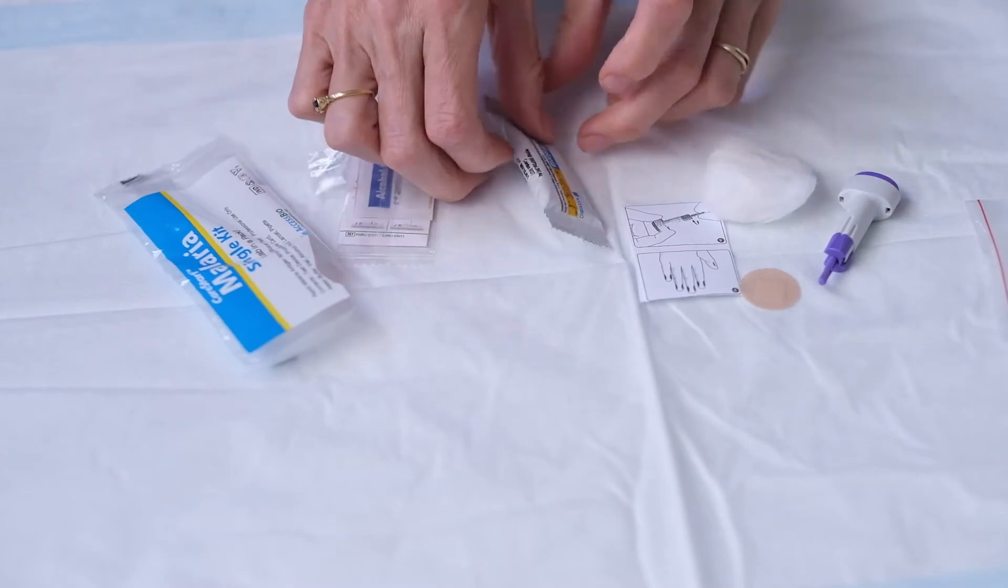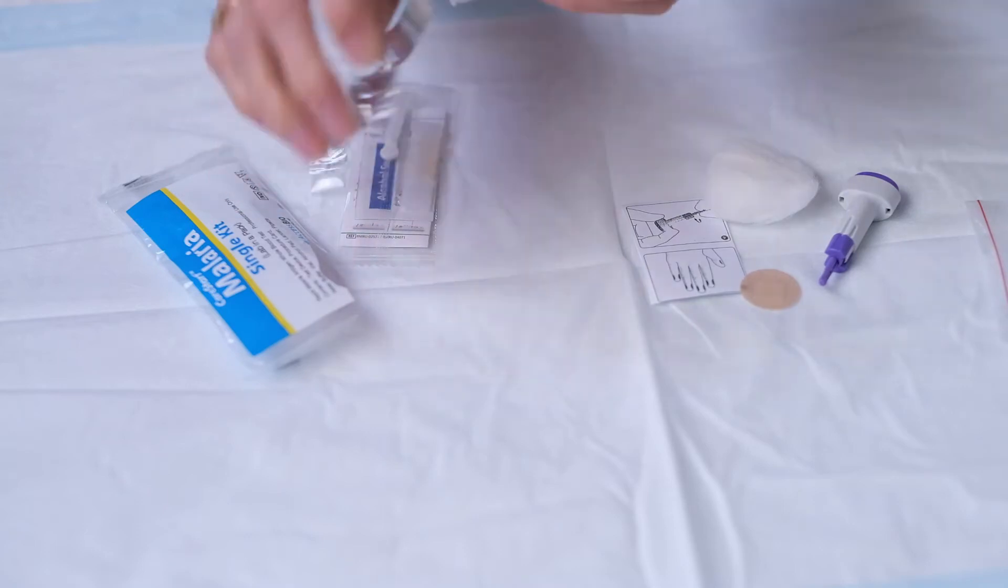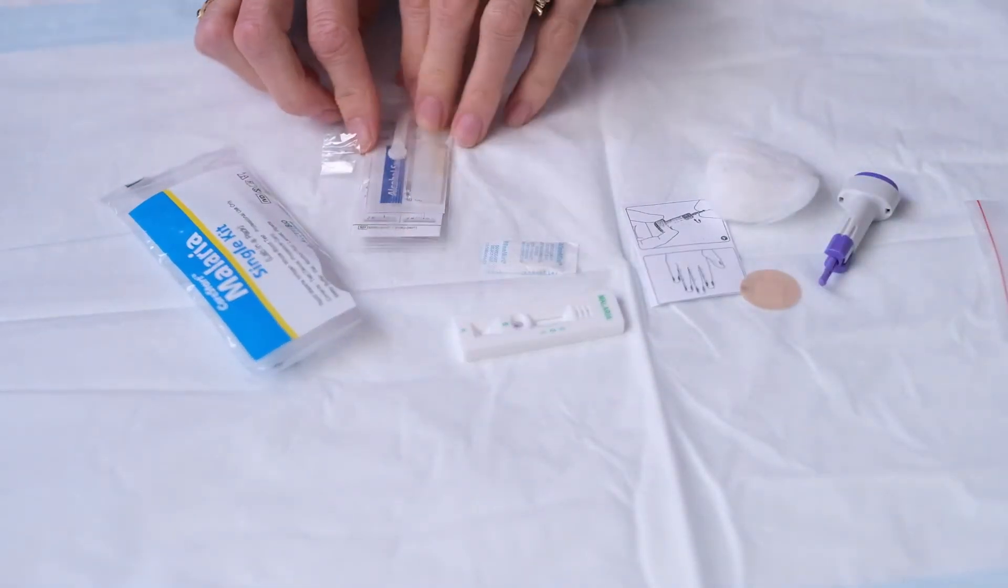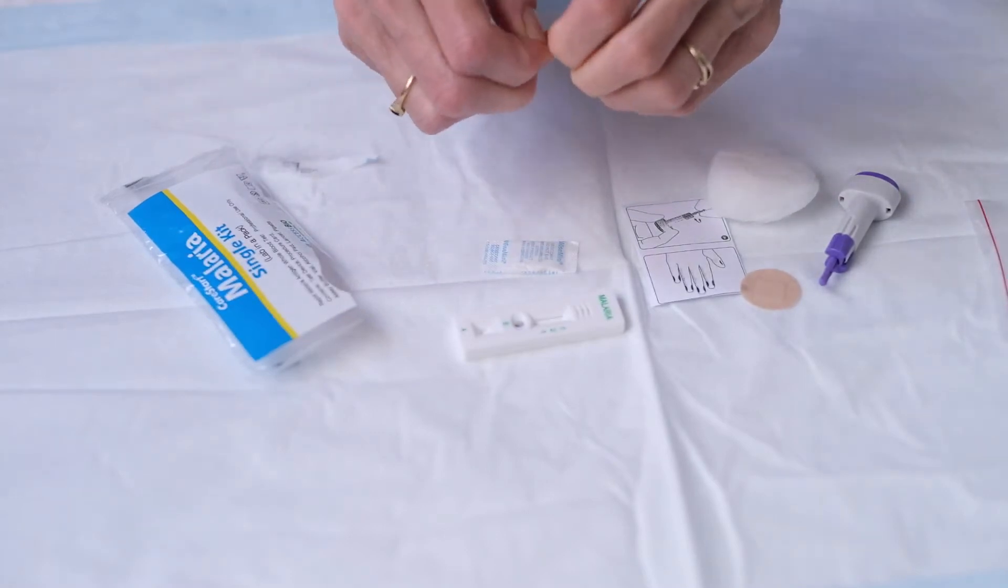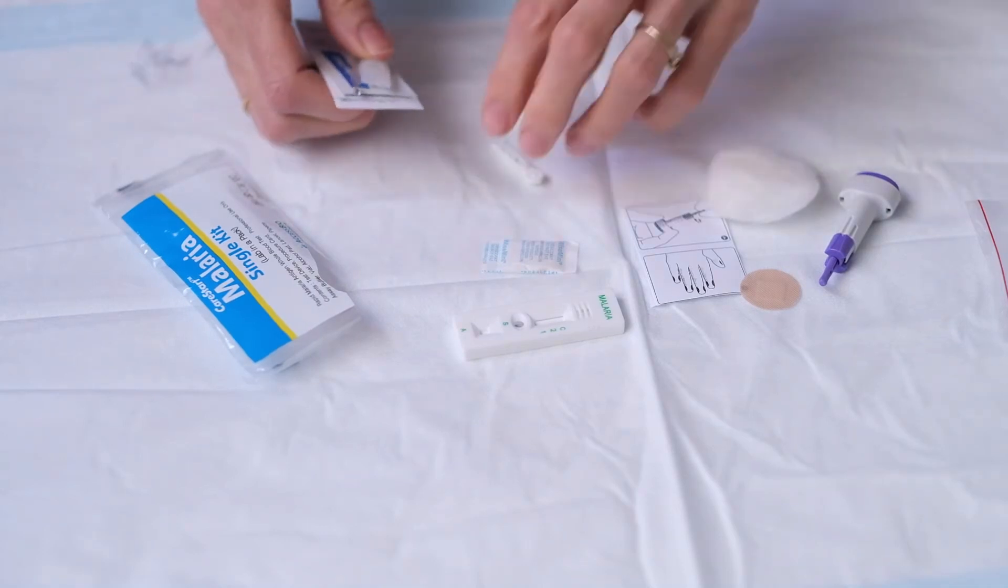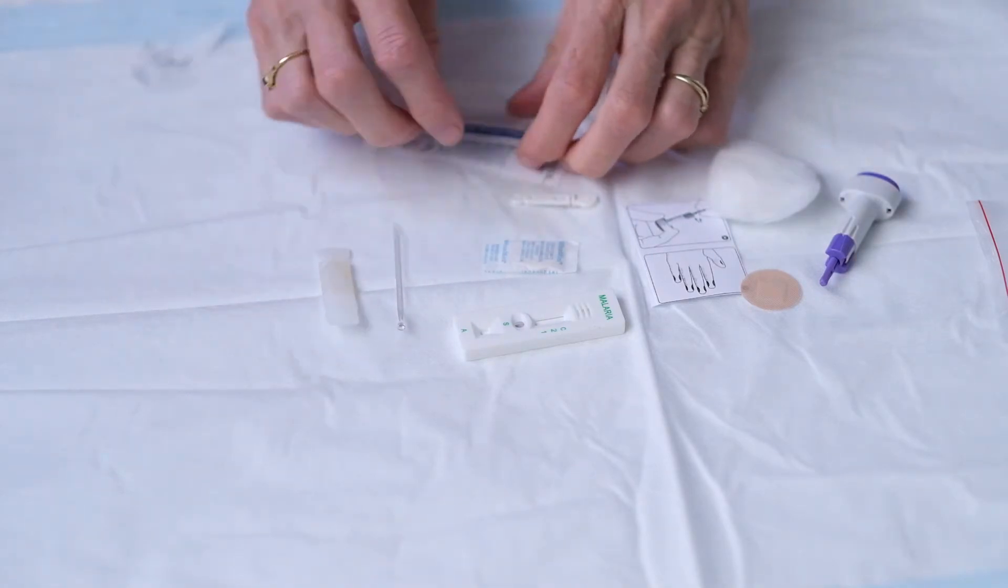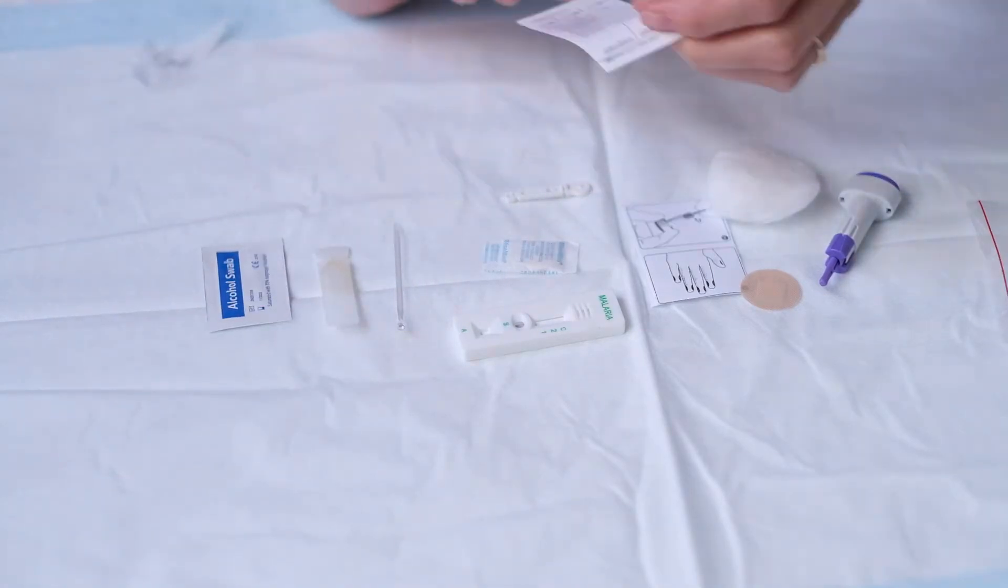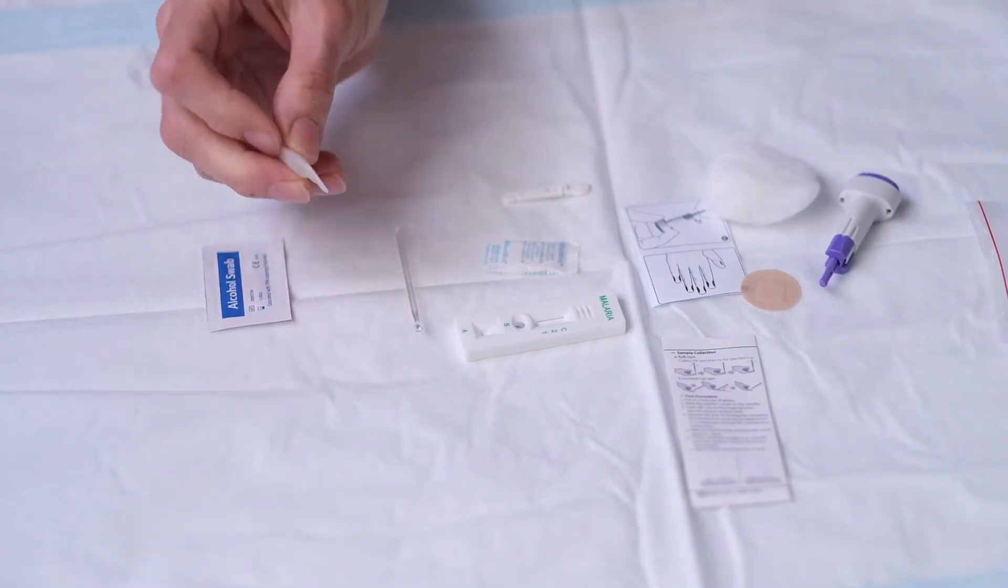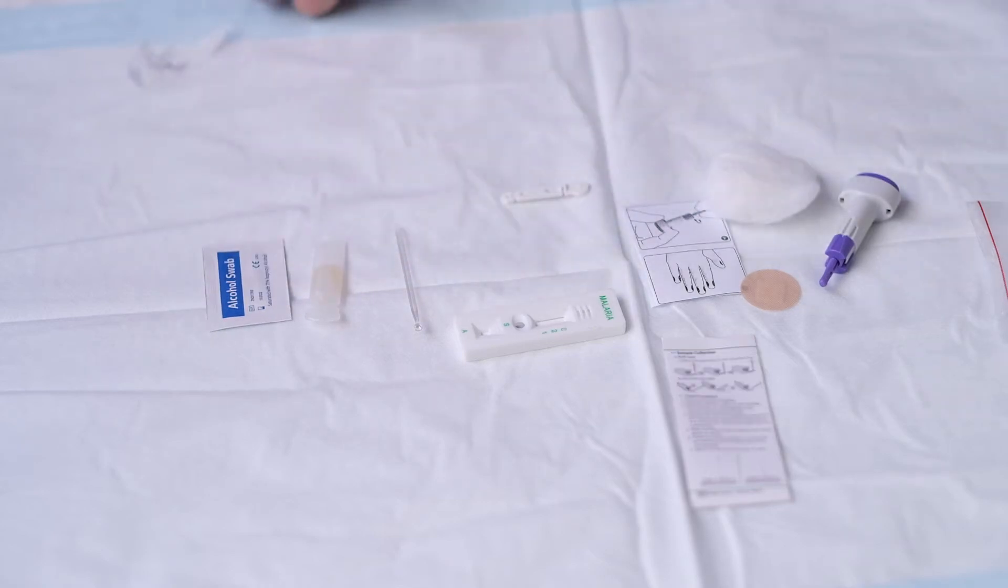So we have the little cassette and another inner packet. It's a bit like Russian dolls. So you can see here all the contents. We've got some more instructions. This is the collection tool, the buffer, a little alco wipe, and this is a packaging device. So we'll chuck that away.